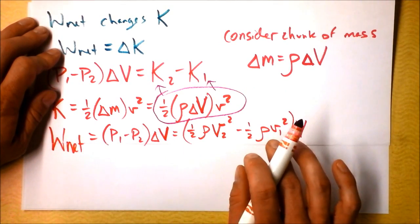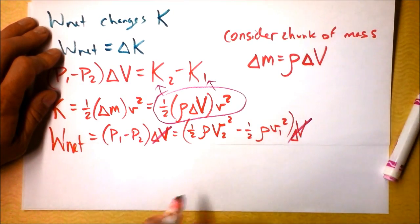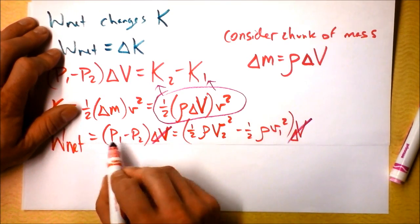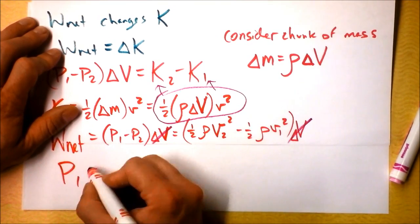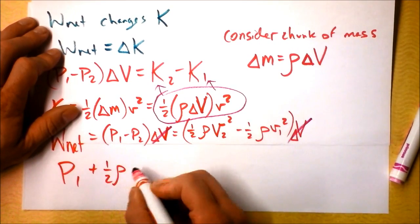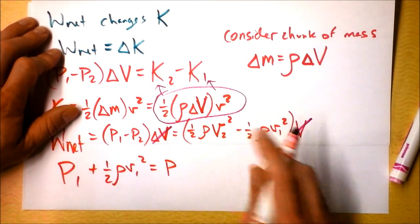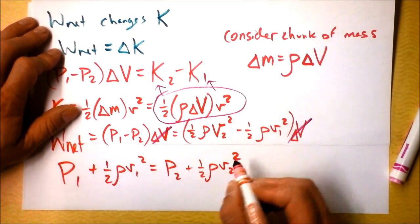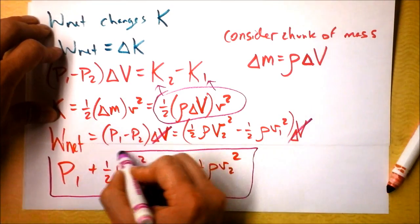We can factor out and cancel the differential volume delta V from both sides. Then rearranging to get all the 'one' terms on one side: P1 plus one-half density times speed 1 squared equals P2 plus one-half density times v2 squared. That equation goes in a box — take a moment to think about it.